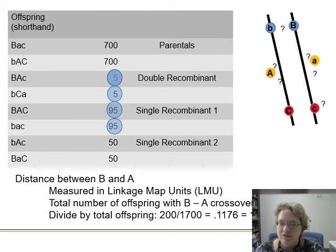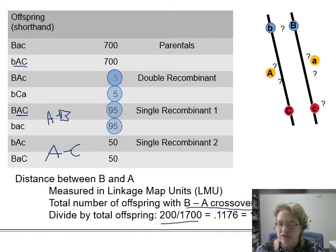So now we're looking at our single recombinants here, and we can take our, what was our total? 1700. Distance between B and A. If we look at our, so here's the, this is where it was B swapped. So we know this is our A to B swap. And then this is our A to C swap. So for the B, the total number of offspring with the B to A crossovers is 200. So we just divide by total offspring, which gets us 0.1167, which is our rate of recombination. So this is the rate. And then we times by 100 to get our percentage or our linkage map units or our map units. It's just the recombination there. So we divide by total offspring, we'll get that.